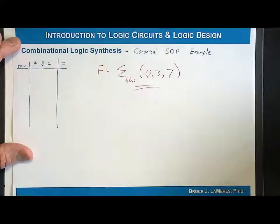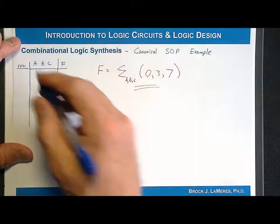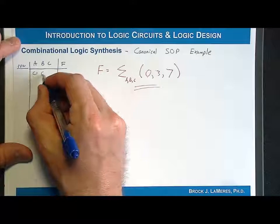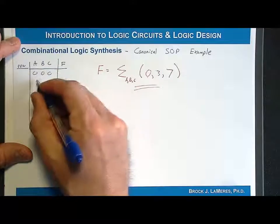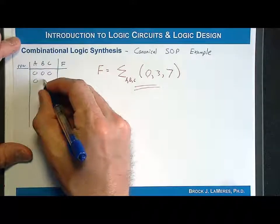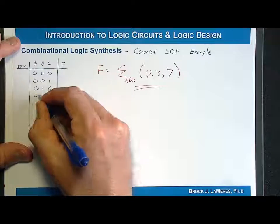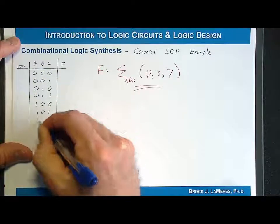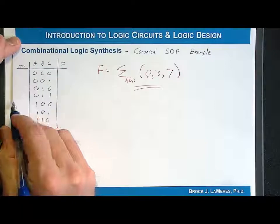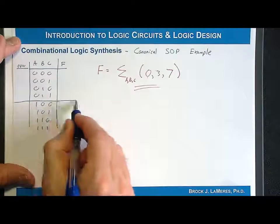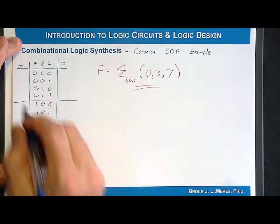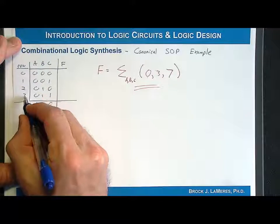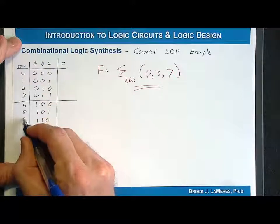Now I'll put down the input codes. I know that I have three inputs, so I have 2 to the n input codes — so I have 8. The rows are: 000, 001, 010, 011, 100, 101, 110, 111. I'll put a little divider line there to keep it clearer, and write the row numbers 0, 1, 2, 3, 4, 5, 6, 7.